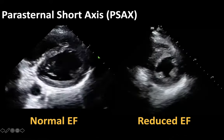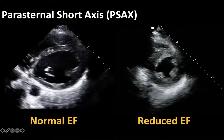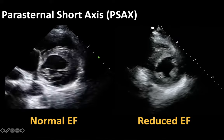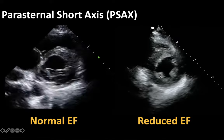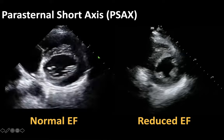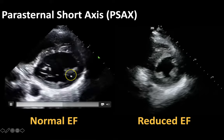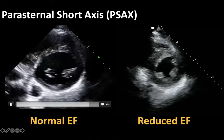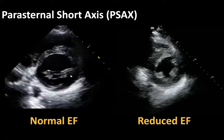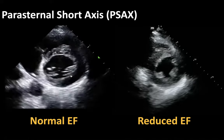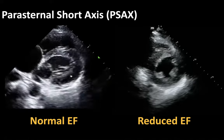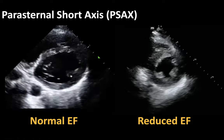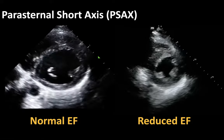You can assess for ejection fraction in most views of your point of care cardiac ultrasound. Your parasternal short axis view is also a pretty good view to assess for this. Your parasternal short axis view is obtained when you start with that long axis we just had and then rotate your probe 90 degrees.